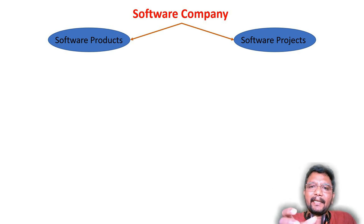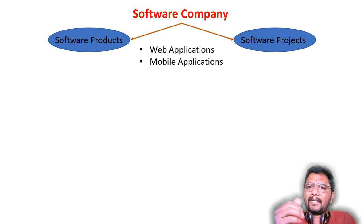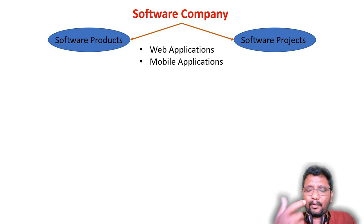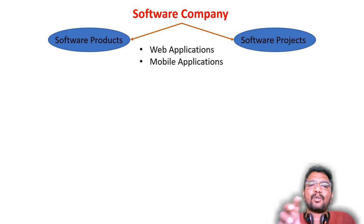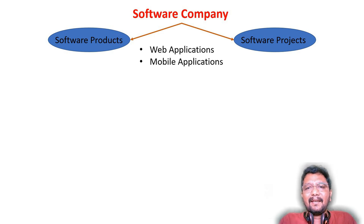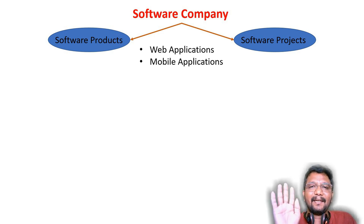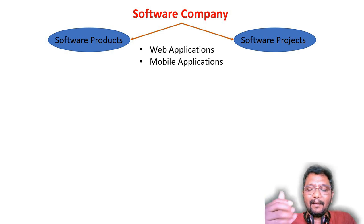Software companies are creating, manufacturing, making both software products and software projects. Whether it is a product or a project, softwares are of two types: web applications and mobile applications. Web applications are those softwares available on websites, and mobile applications are those softwares available on your mobile phone. Nowadays, softwares are of these two types: web applications and mobile applications.